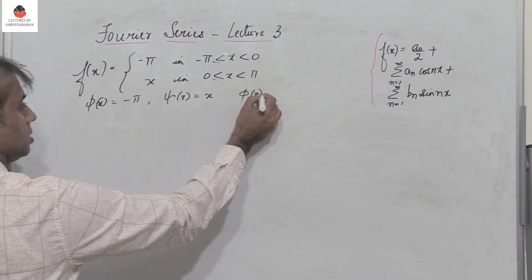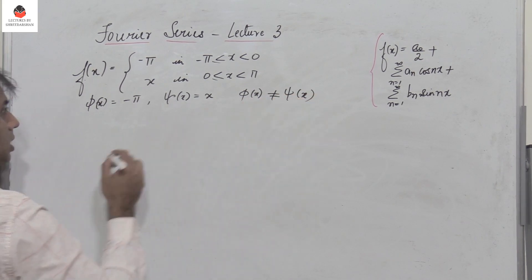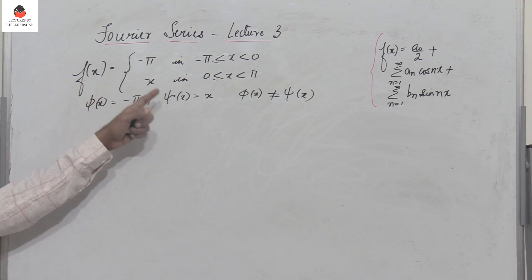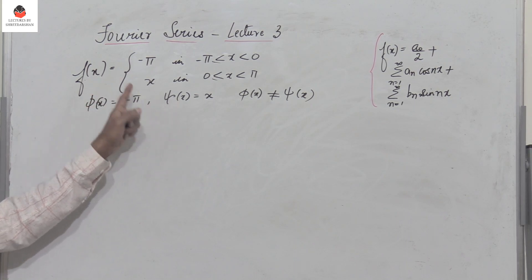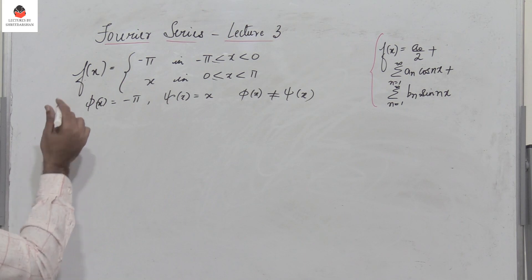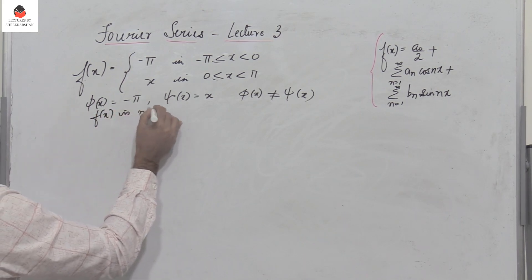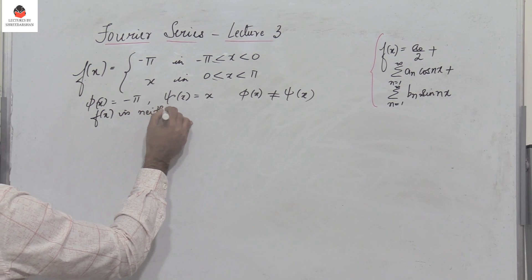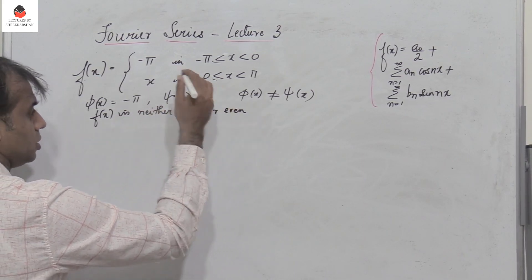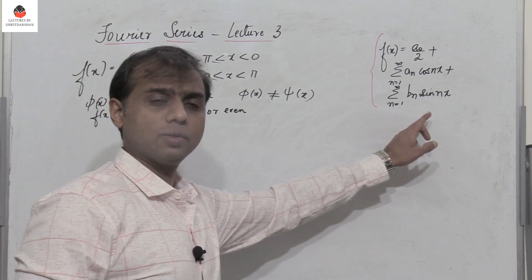We find that φ(x) is not equal to ξ(x). Even if I substitute φ(−x), I will never get ξ(x) or minus ξ(x). So this function f(x) is neither odd nor even, and in such a case we have to find a₀, aₙ, as well as bₙ.